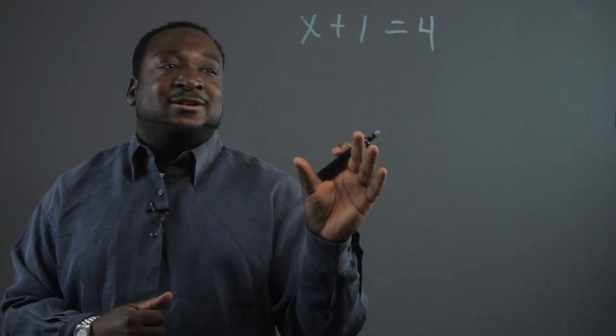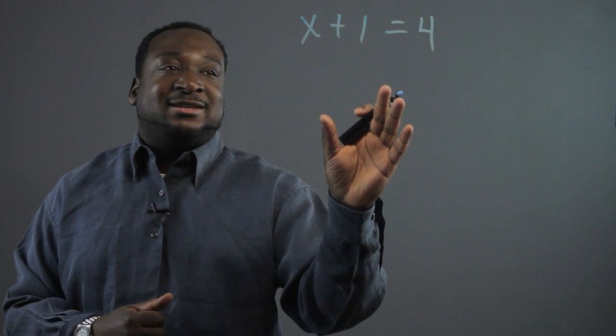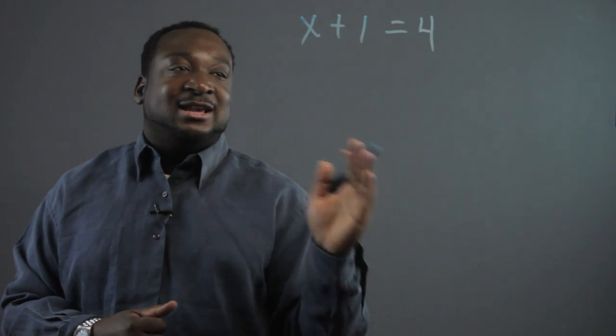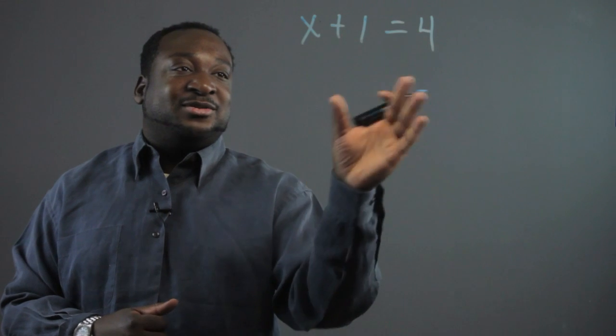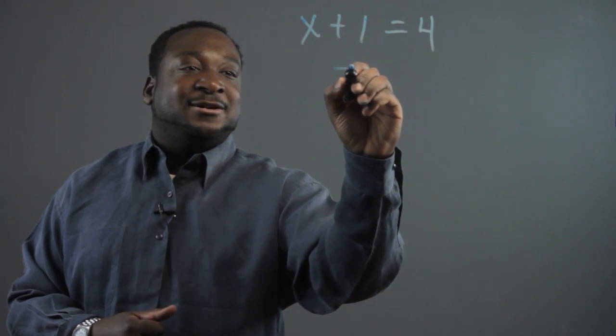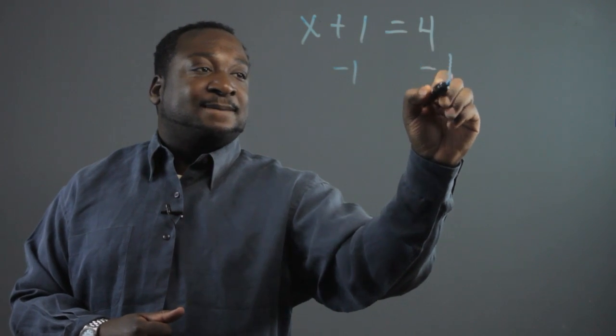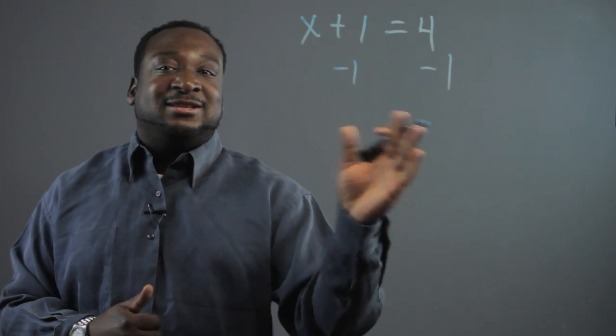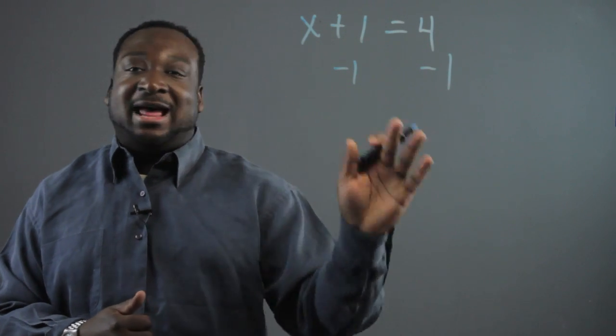But basically this is just a logical statement. Since one side equals the other side, when we do the same operation to both sides, let's say we're adding a negative 1, it should still be the same because you're doing the same thing to both sides. So it's just a logical step.